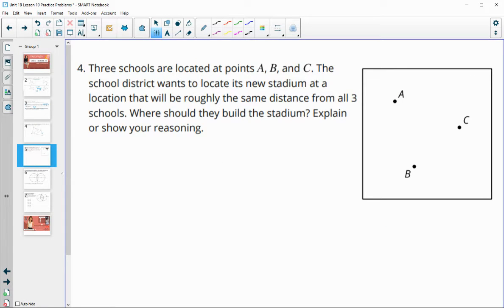Number four: three schools are located at points A, B, and C. The school district wants to locate a new stadium at a location that will be roughly the same distance from all three schools. Where should the stadium be built? Explain or show your reasoning.